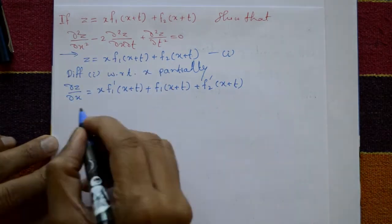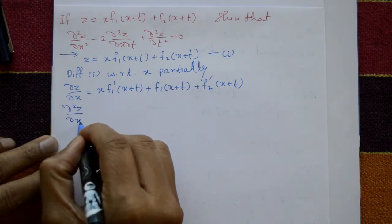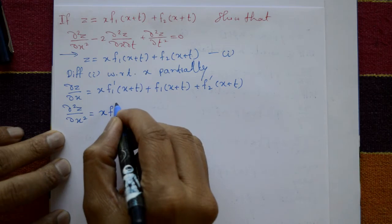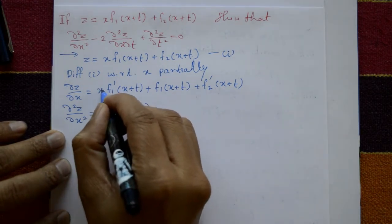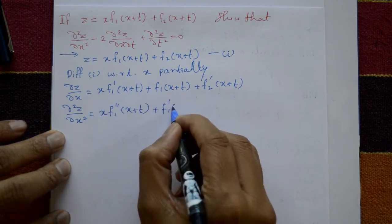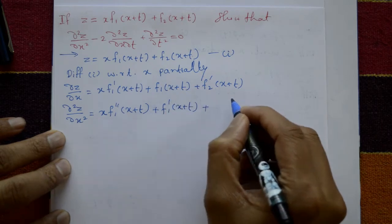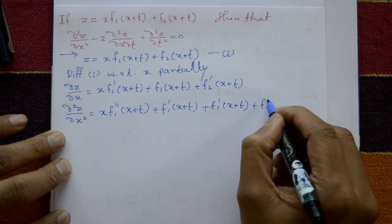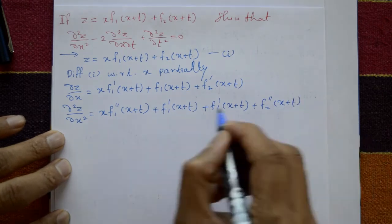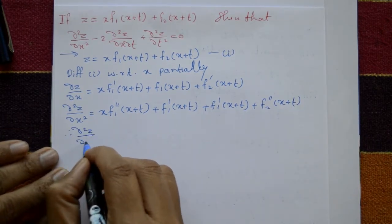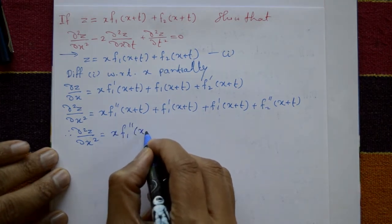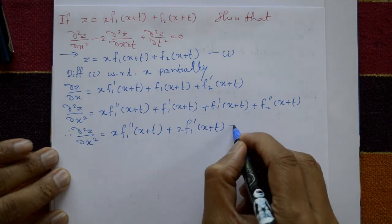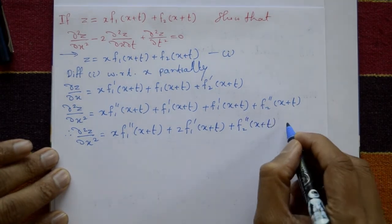To find ∂²z/∂x², differentiate once more with respect to x. The first term is again a product: x times f1 double-dash(x+t), plus f1 dash(x+t) from differentiating x. Then adding the f1 dash(x+t) term again, and differentiating the last term gives f2 double-dash(x+t). Therefore ∂²z/∂x² equals x·f1''(x+t) plus 2·f1'(x+t) plus f2''(x+t). This is equation number two.